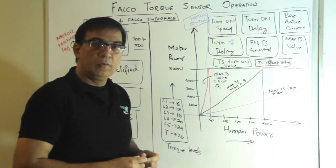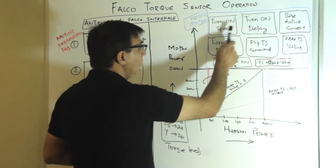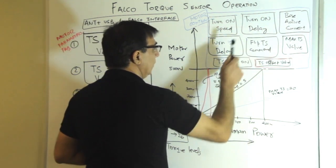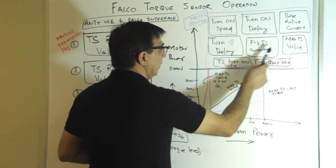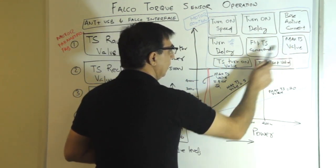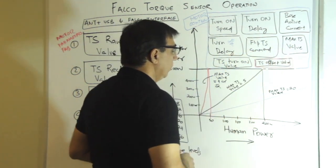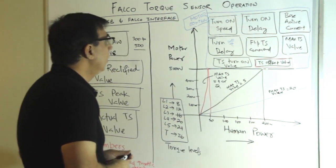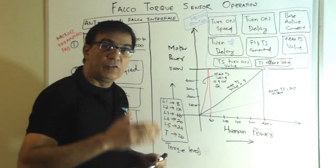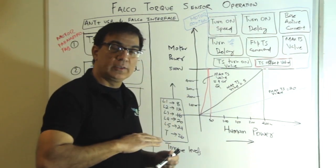Let me quickly talk about the turn on speed, the turn on delay, base active current, turn off delay, flip TS command, and TS turn on value. Turn on speed is the speed at which the torque sensor comes on. You can set that.